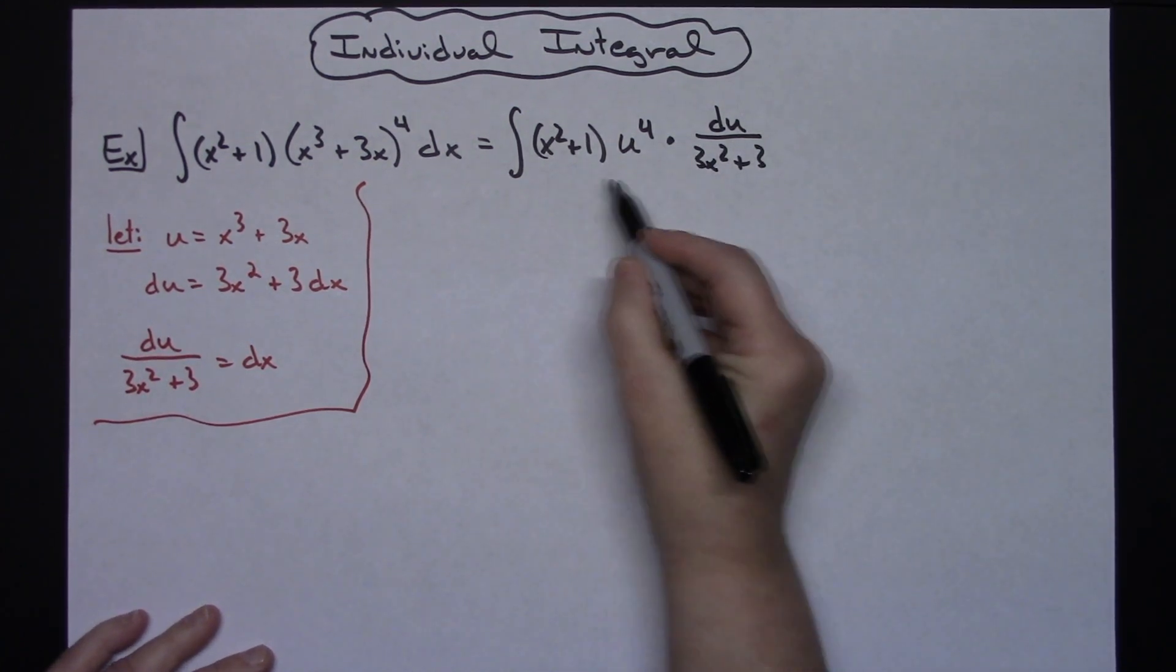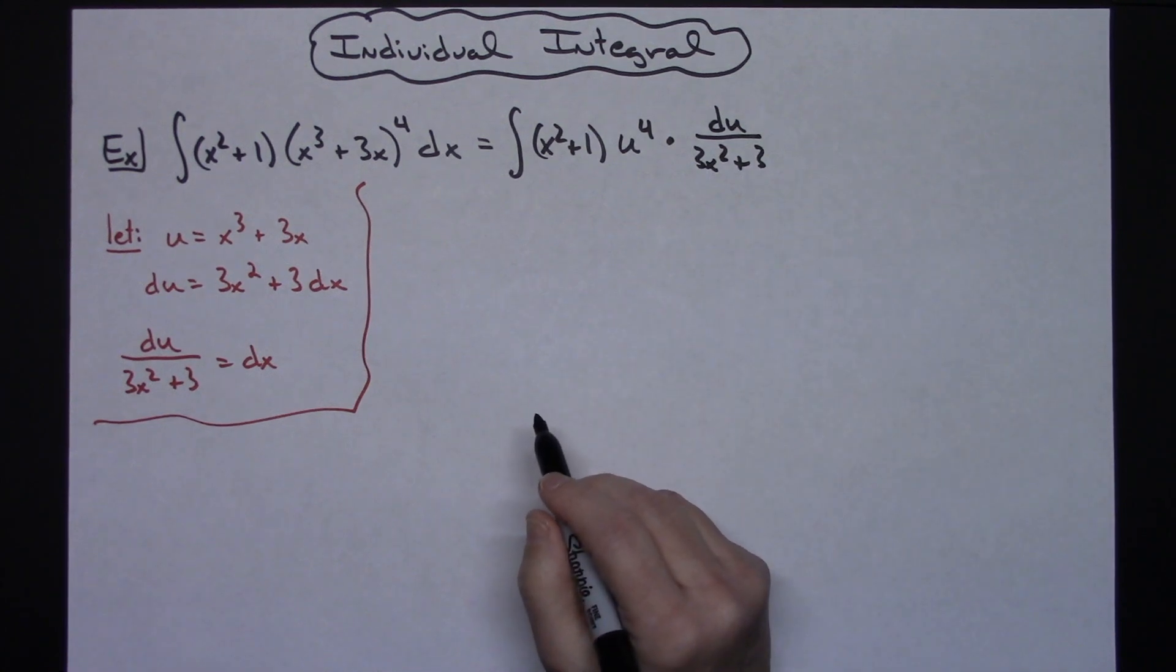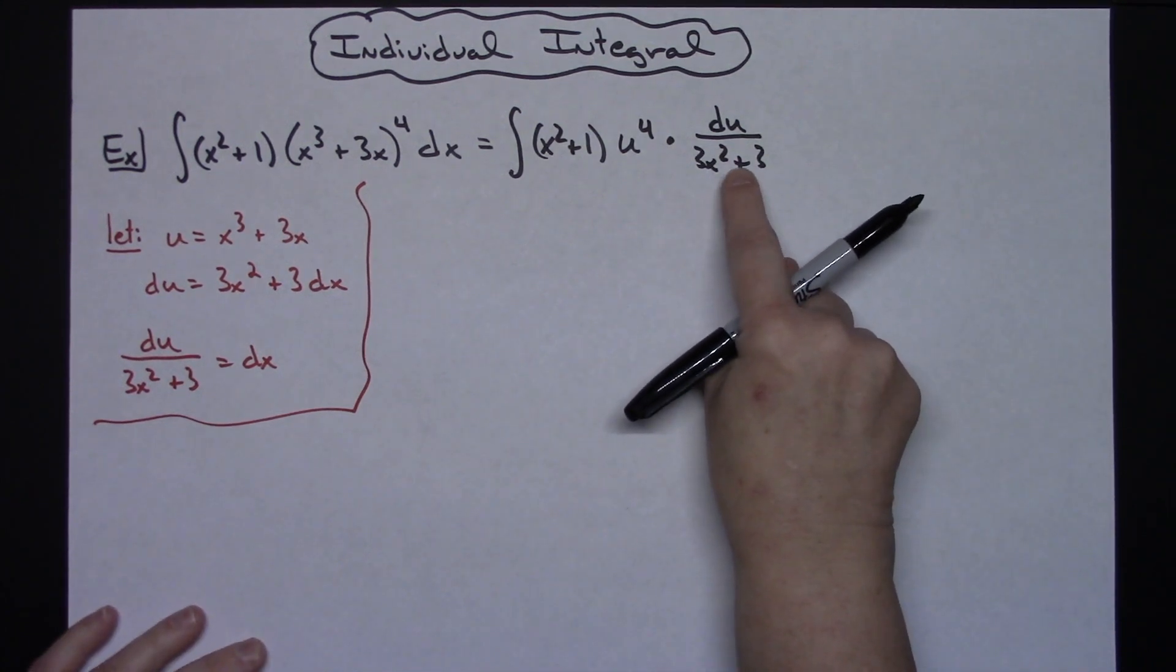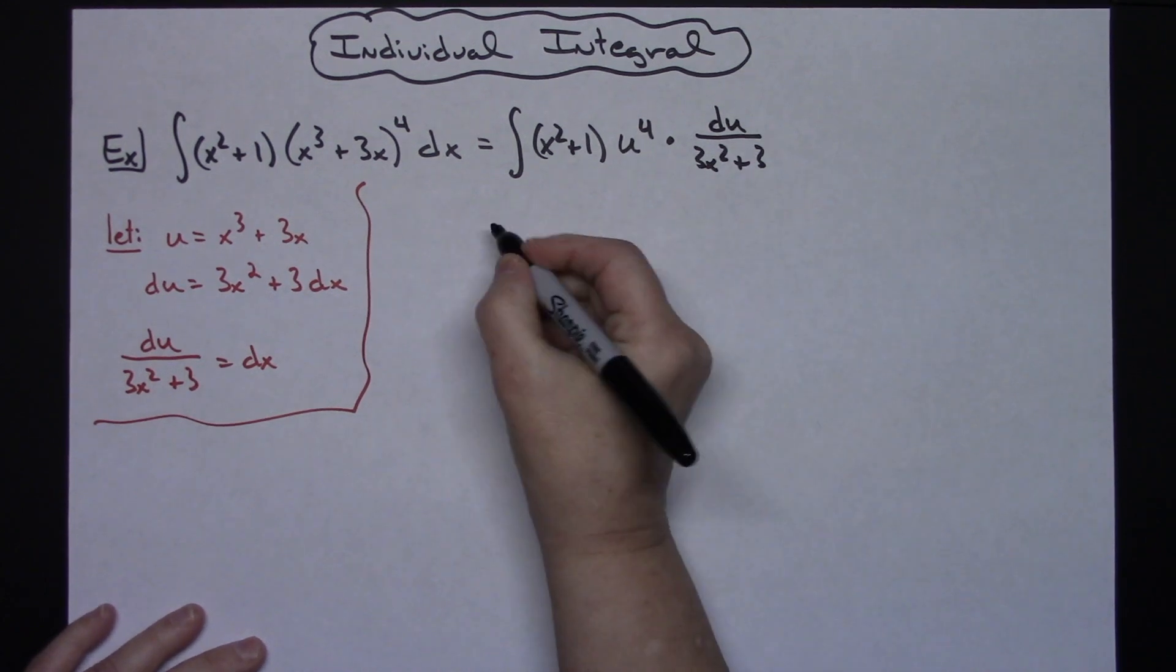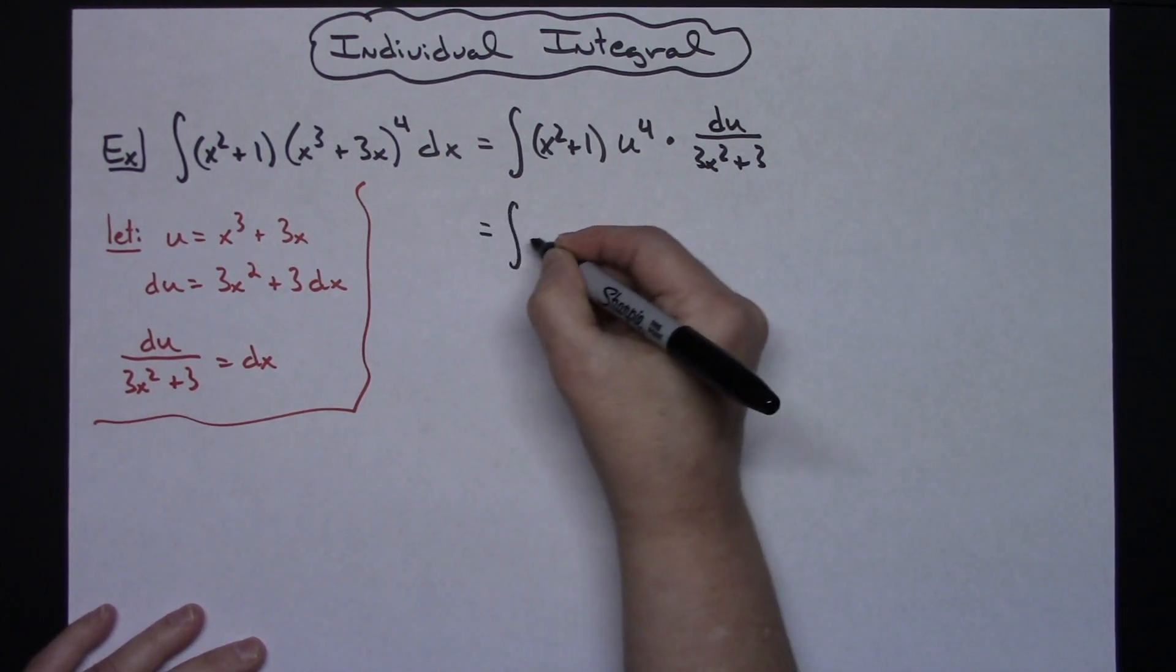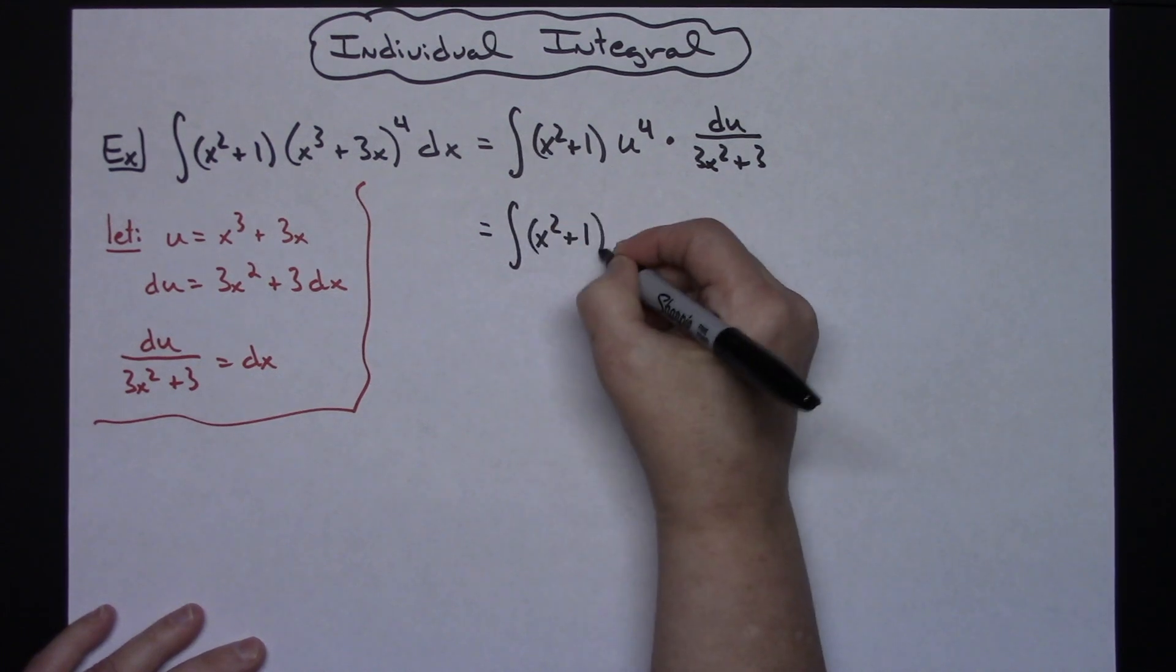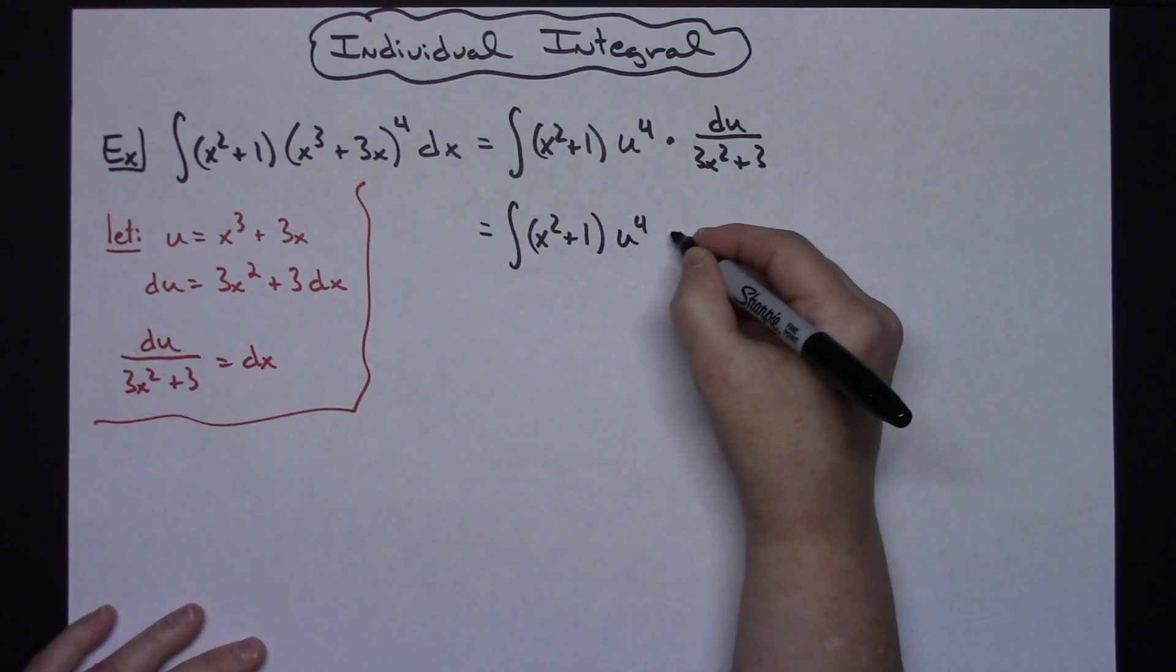Now at first glance you're looking at this and it doesn't appear that anything's going to cross out, but I can algebraically manipulate this and factor out a 3. So when I do that, leaving everything else the same here, x squared plus 1 times the u to the fourth, and